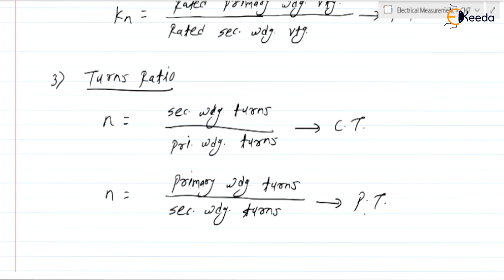These are the three ratios associated with instrument transformers. We also have the ratio error, phase angle error, and ratio correction factor, which we are going to discuss later on.